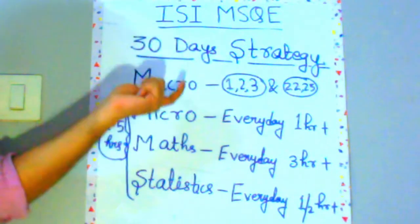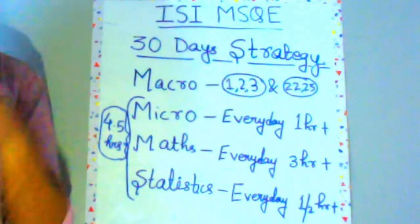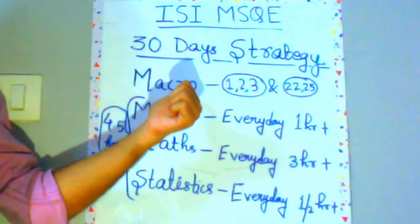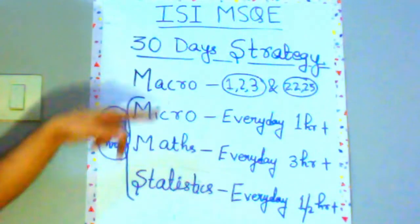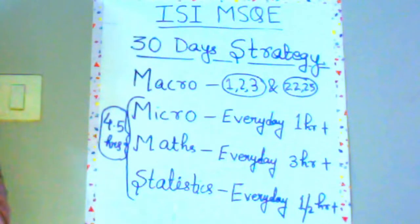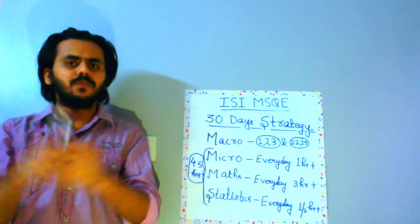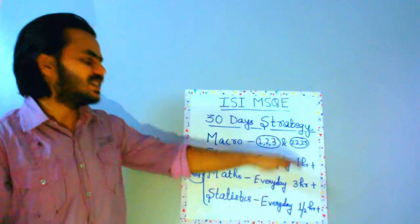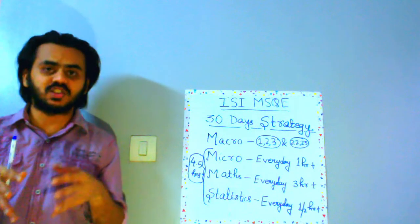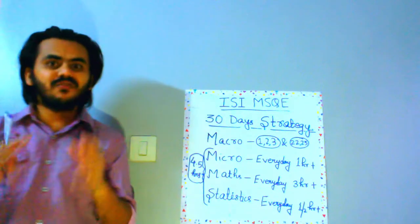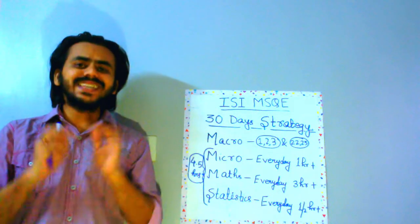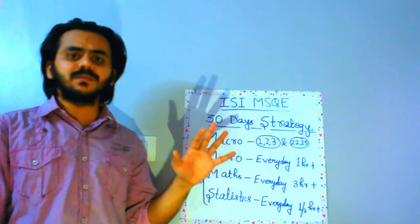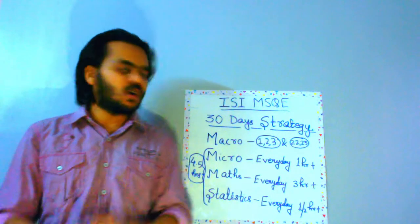That 4.5 hours is apart from your macro preparation in the first 3 and last 2 days. So in those days, the minimum is 4.5 hours of micro, maths, and statistics plus macroeconomics. You can study more — nobody is stopping you — but maintain this ratio. The maths paper of MSQE is highly scoring and you can easily touch around 100% in the maths part, but it's difficult to touch maximum score in micro, statistics, or macro.